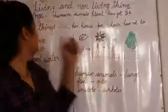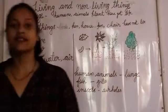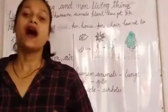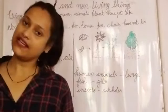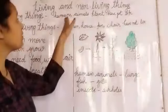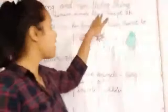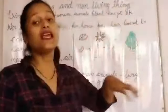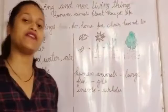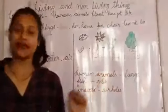First are living things. Things which have life in them are called living things. Humans, animals, plants — they have got life. That's why we call them living things.